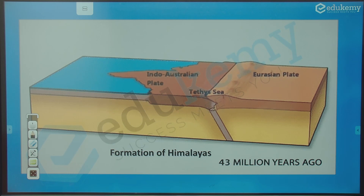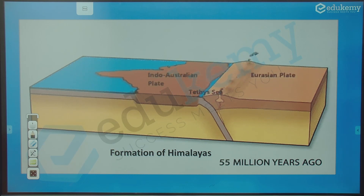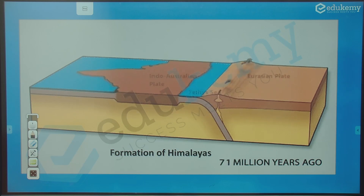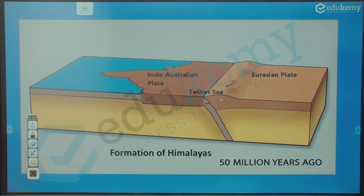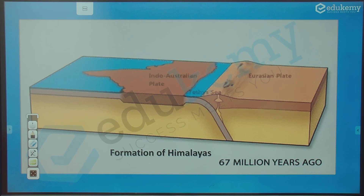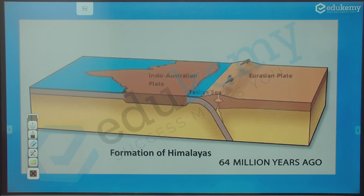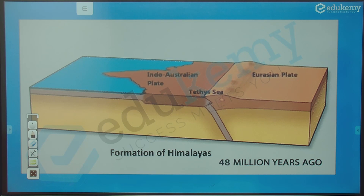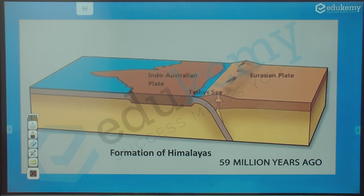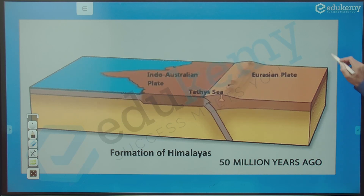Under-thrusting means the plate goes under the other continent but does not enter the mantle. Volcanism in the Himalayas continued as long as ocean subduction was occurring; once ocean subduction stopped, volcanism also stopped. In divergent boundaries, lava is basaltic; in convergent boundaries, lava is andesitic.